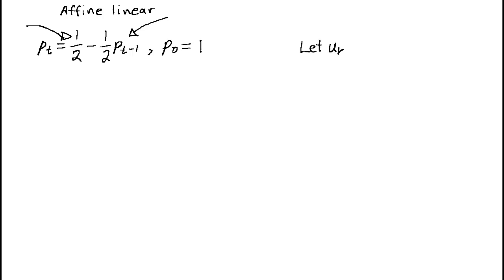First, we let u sub k equal p sub k minus 1 third. Next, we go back to the equation itself and subtract 1 third from both sides.